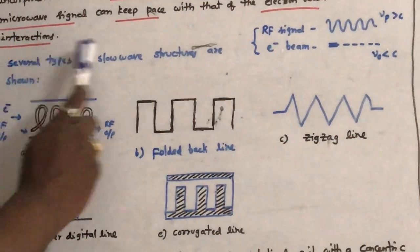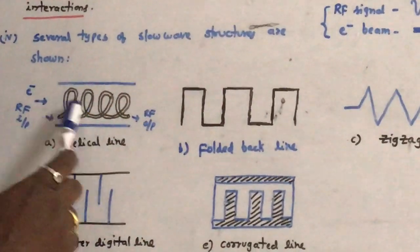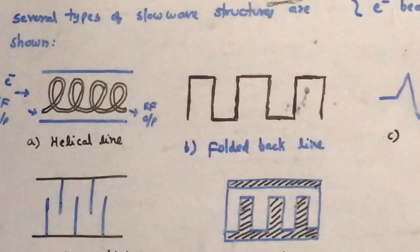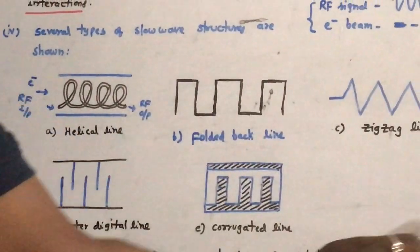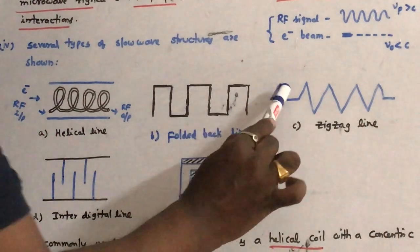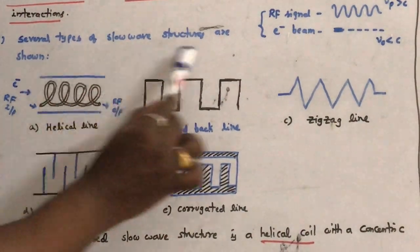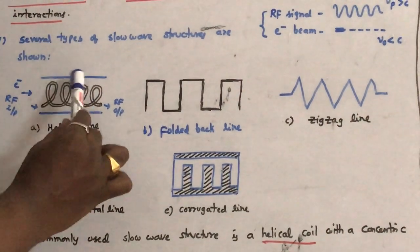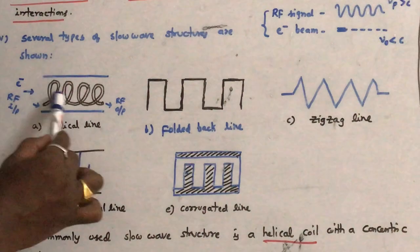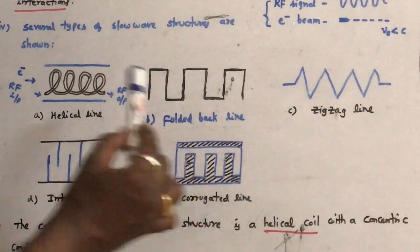Let us see the several types of slow wave structures. There are various types: helical line slow wave structure, folded back line, zigzag line, inter-digital line, and corrugated line. This is also a very important short answer question — draw different slow wave structures. The purpose of all these structures is to reduce the velocity of the RF signal.